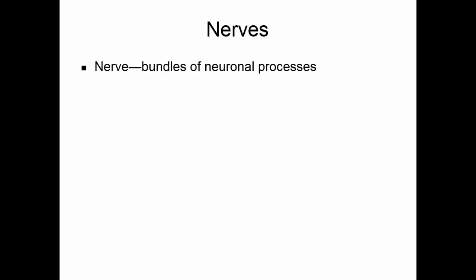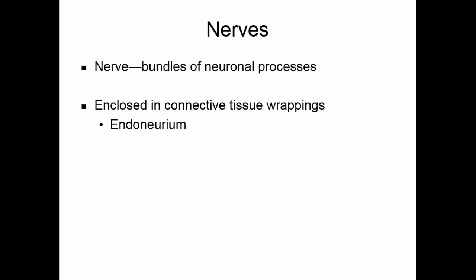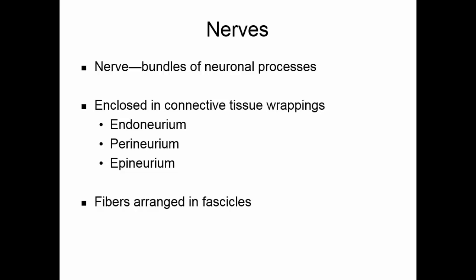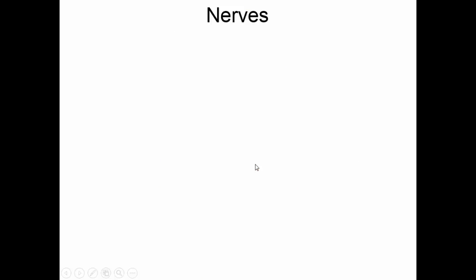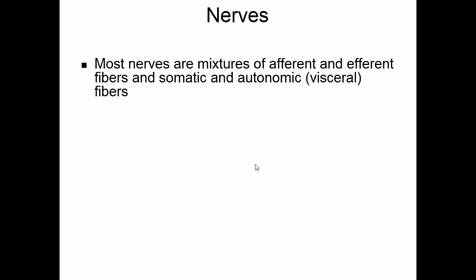Nerves are bundles of neuronal processes enclosed in connective tissue wrappings. The endoneurium surrounds each individual axon or nerve process. The perineurium surrounds bundles of nerves called fascicles, and the epineurium surrounds the entire nerve. Just like muscles, the fibers in nerves are arranged in smaller bundles known as fascicles. There are also blood vessels that travel with the nerves to ensure adequate blood supply. Most nerves are mixtures of afferent and efferent fibers — both motor and sensory — and mixtures of somatic and autonomic or visceral fibers.